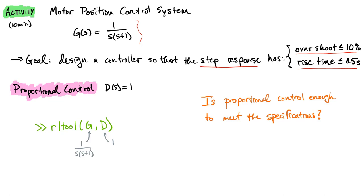In this case, we're going to look at proportional control, which is essentially just a constant value. We're putting in one here because in this activity you'll use a new tool in MATLAB called the rltool. You call rltool, give it the transfer function of the open loop system, then give it the nominal structure of the controller transfer function — in this case, just a value of one — which allows you to add in a gain and move it around within the rltool.